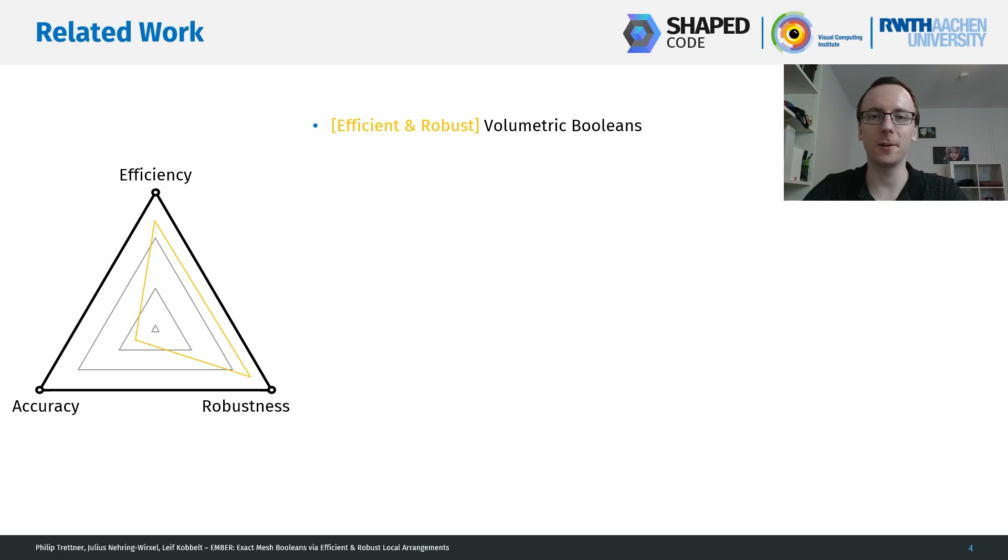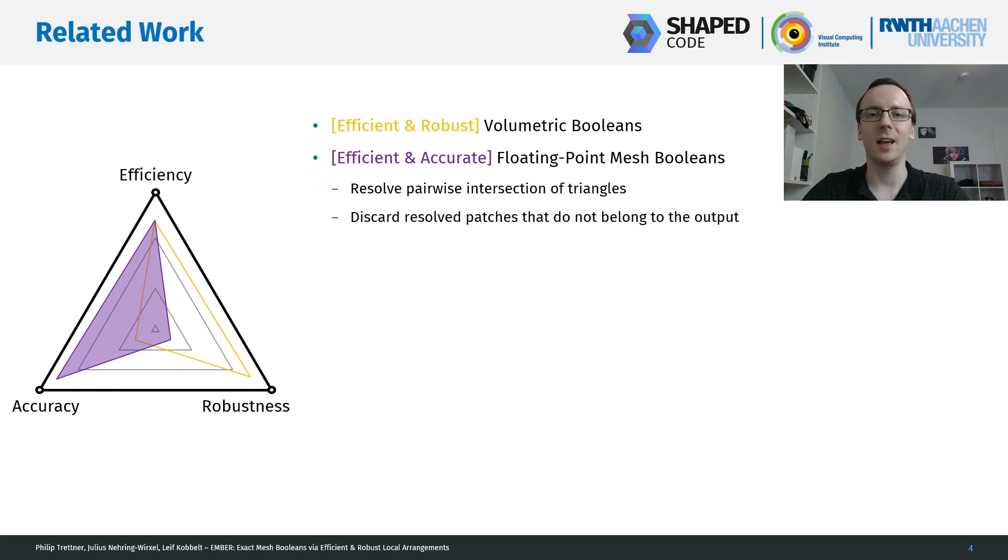To achieve the accuracy we're looking for, we have to compute the booleans on the input meshes themselves. This works by resolving pairwise intersections between triangles and then discard all the patches that do not belong to the output by some kind of classification scheme. I'll actually provide more detail on this in the rest of the talk. However, if you do this using floating point calculations, you will quickly run into numerical issues that ultimately jeopardize the robustness of the method.